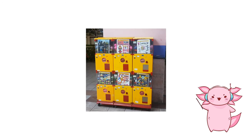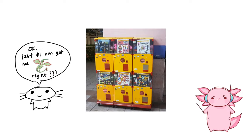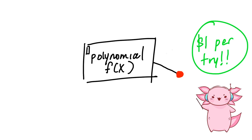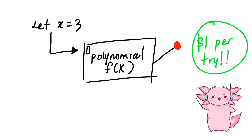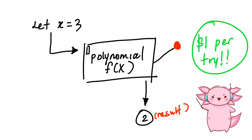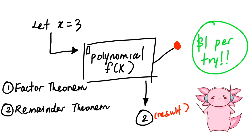You know those gacha toy machines? I put $1 in sure I'd get my favorite Pokémon — and that's how my gambling addiction started. In this topic, we're given a polynomial f(x) which works like a gacha machine: we let x equal something, put it inside f(x), and get a result. There are just two simple theorems: the factor theorem and the remainder theorem.